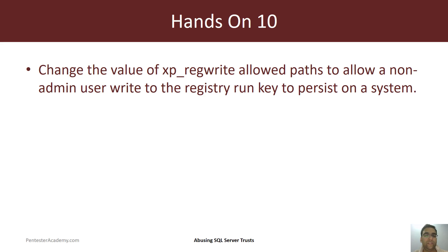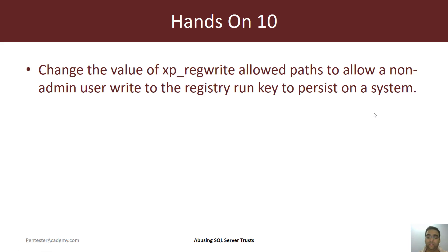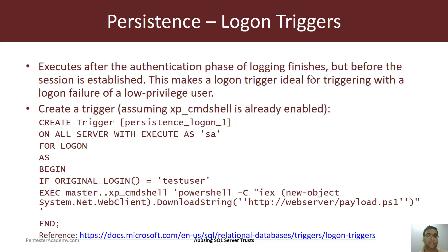The hands-on for this is to change the value of xp_regwrite allowed paths to allow a non-admin user to write to the registry Run key to persist on a system. We are assuming that on the SQL Server registry key where the SQL Server service is running as a local administrator, you need to try this — change the value of xp_regwrite allowed paths. The path to the key is provided in the referenced link.